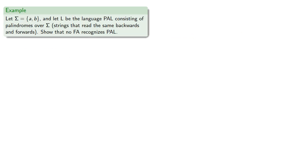Now our theorem is often used in the negative, so let's consider the language of palindromes over a two-symbol alphabet. We want to show that no finite automaton recognizes this language. So we'll produce a set of pairwise distinguishable strings.